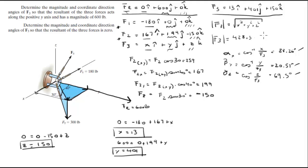Those are the final answers for the first problem. For the second one, almost the whole procedure is the same except that F of R's y component becomes zero instead of 600, because all the forces cancel out.